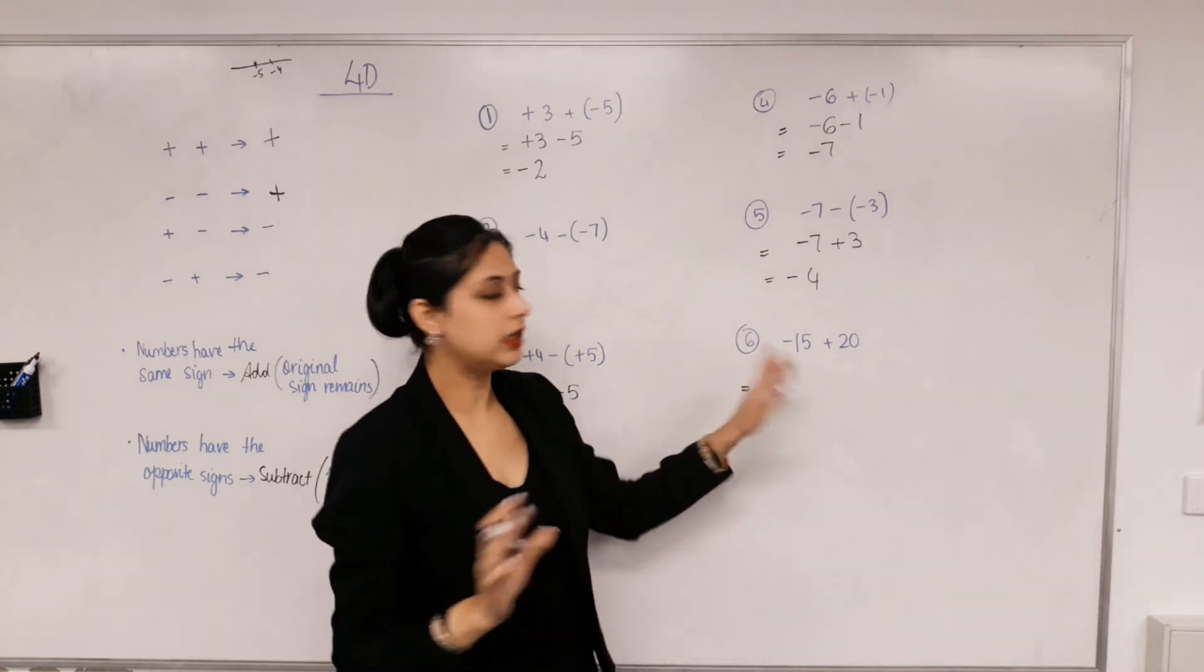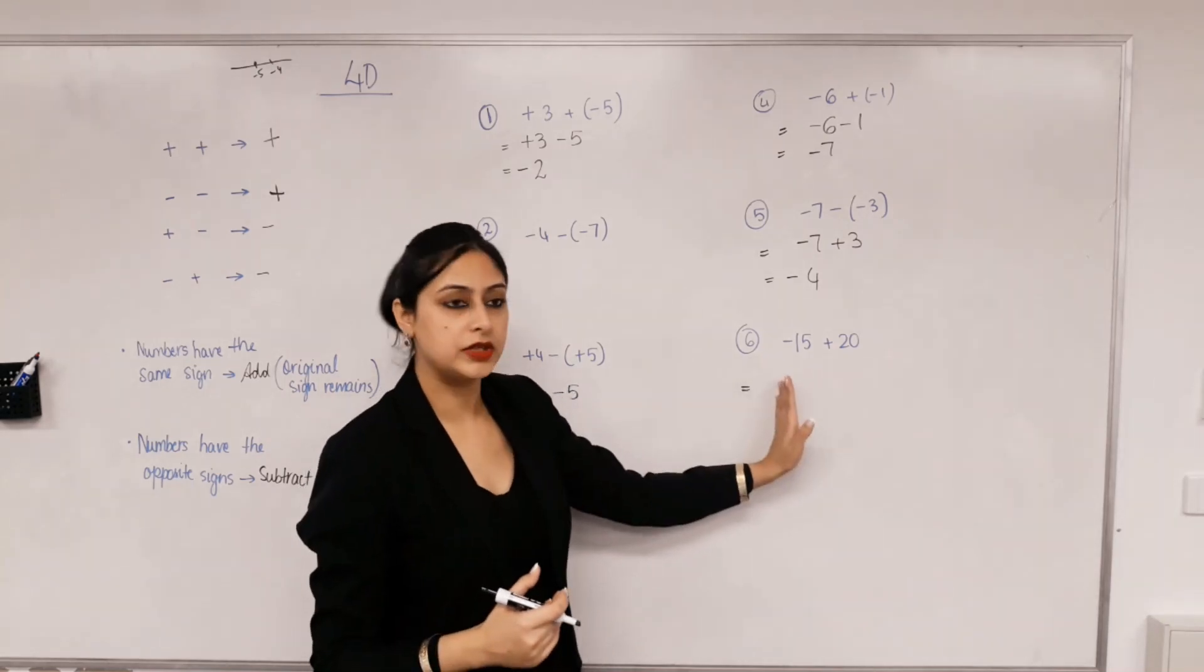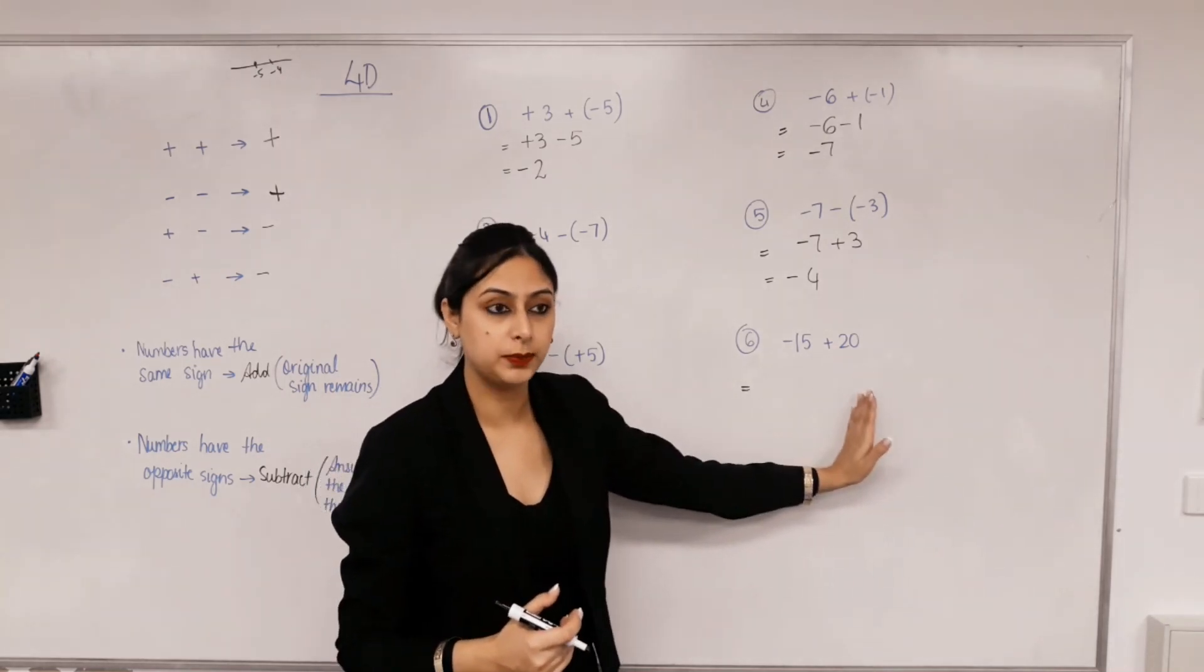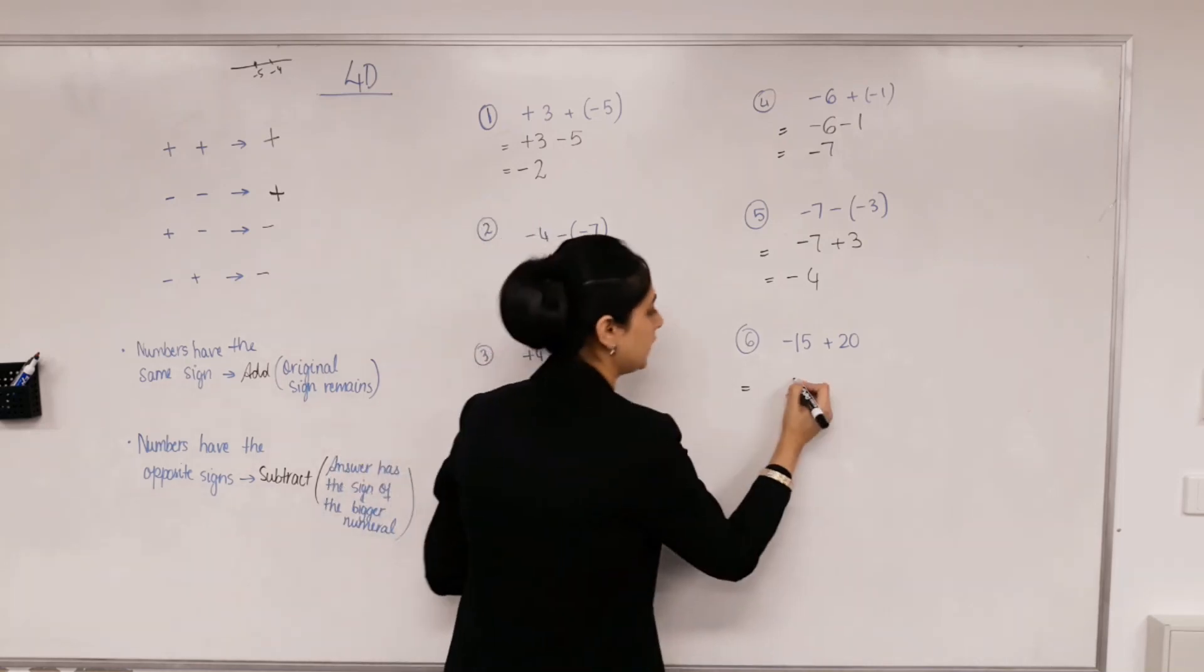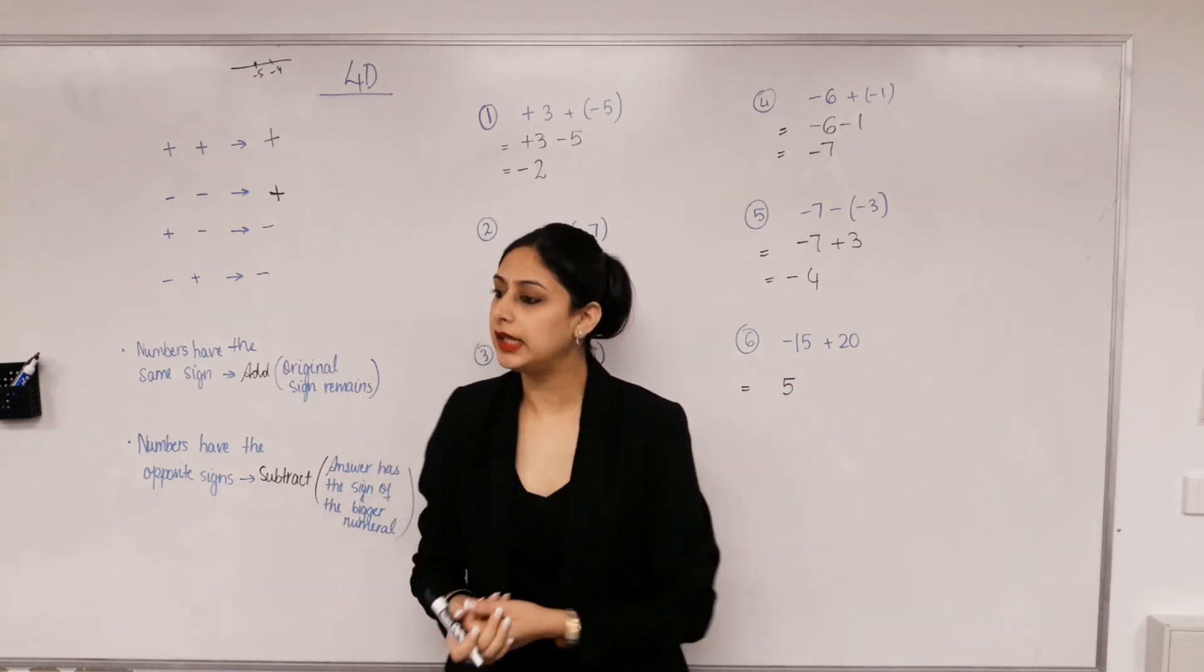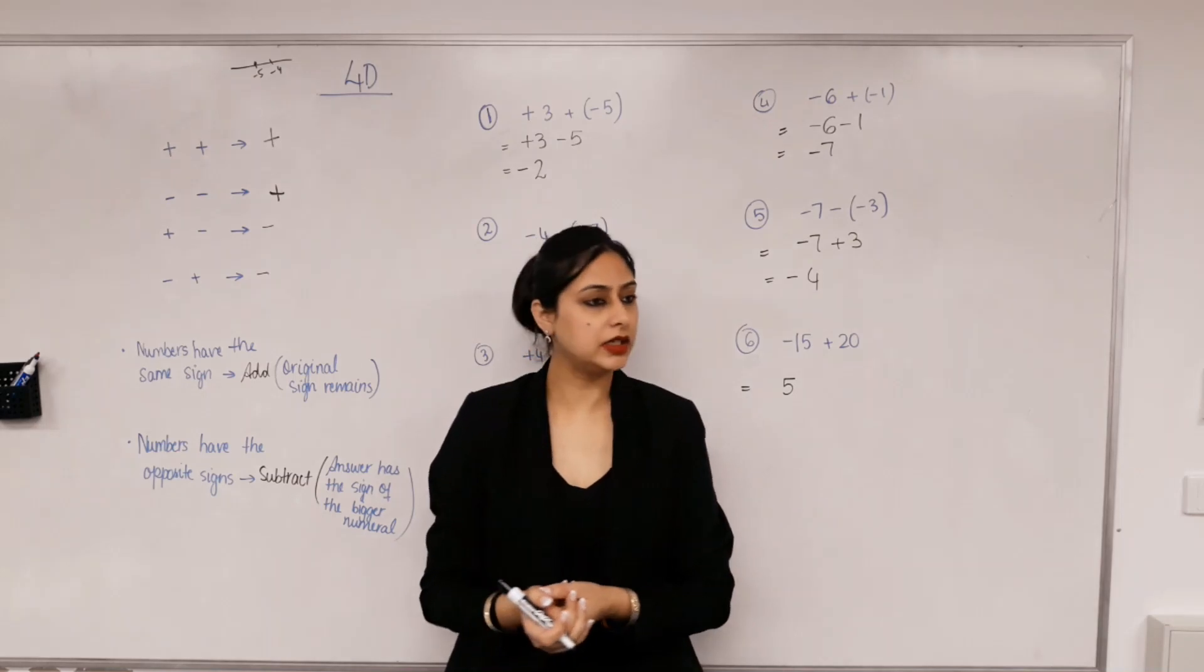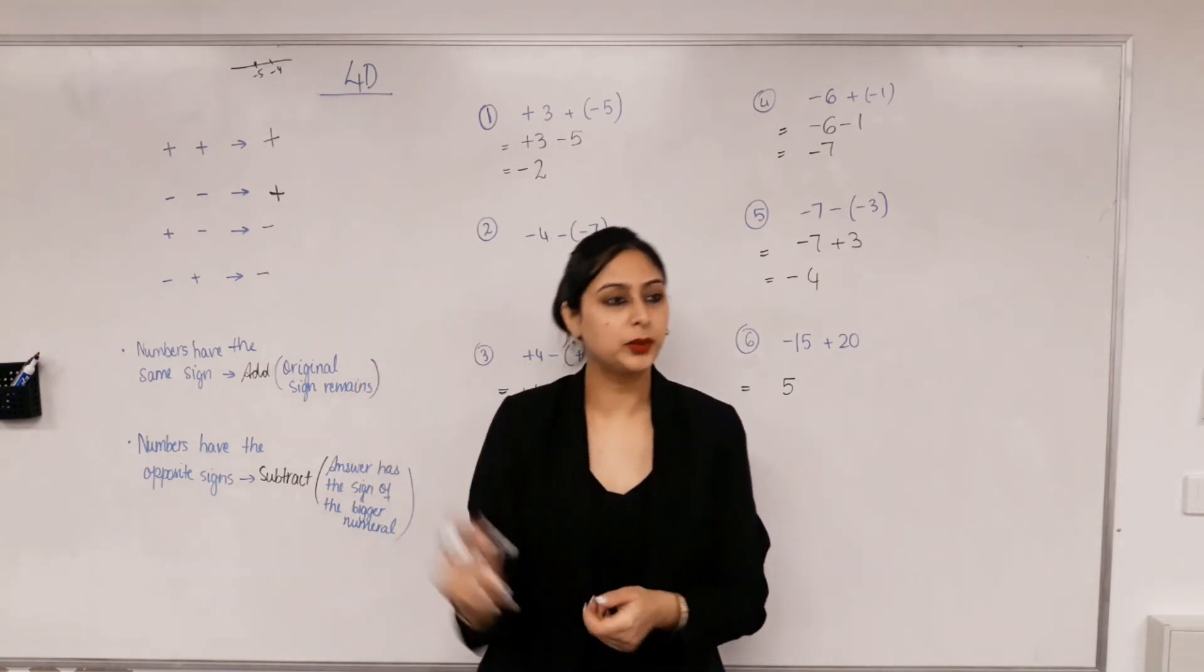Next one. Again, I didn't give you two signs. So the first step's already done. So you've got 15 in the negative teams, 20 in the positive. How much will the positives win by? Five. So what's the answer? Five. Easy. Adding subtracting integers made easy.